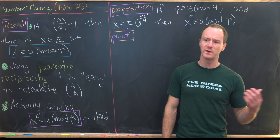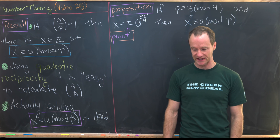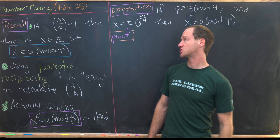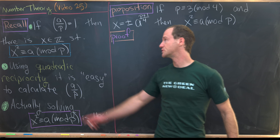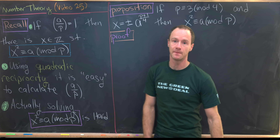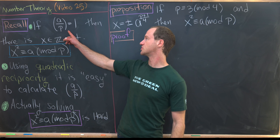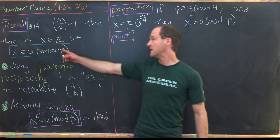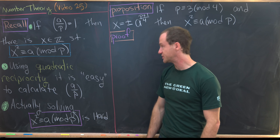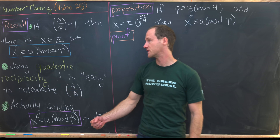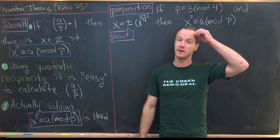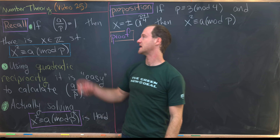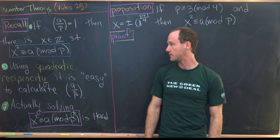Before we start proving some propositions related to that, let's recall a couple of things. First is the Legendre symbol, which we denote by (a/p). The Legendre symbol has an output of 1 if there exists an integer x such that x² ≡ a mod p — in other words, a is a perfect square mod p.